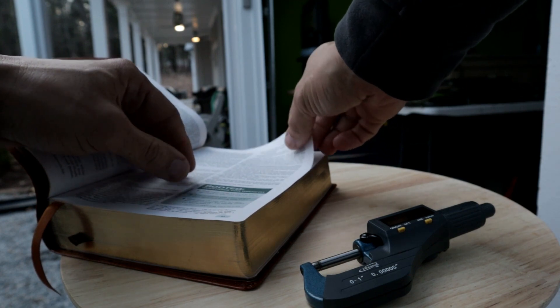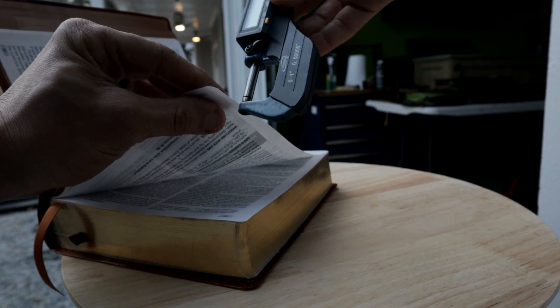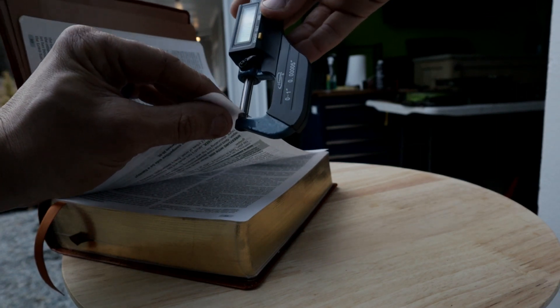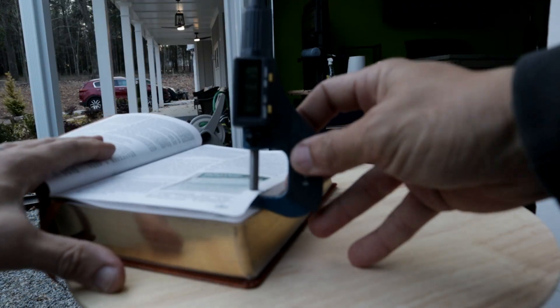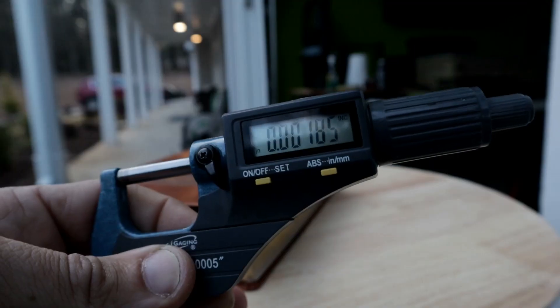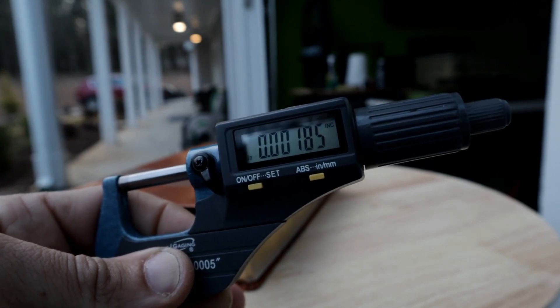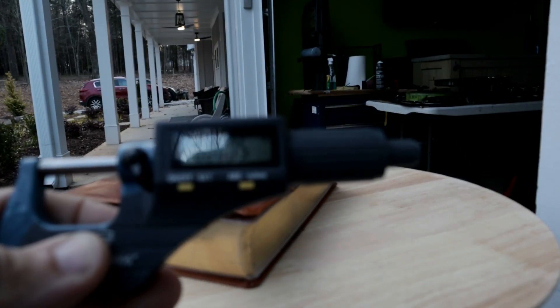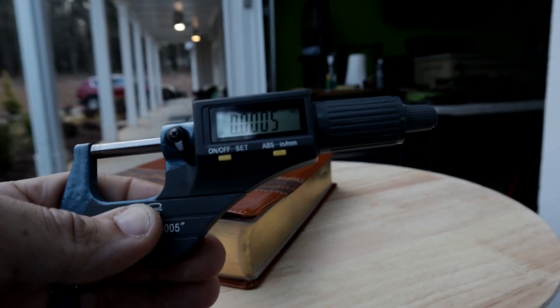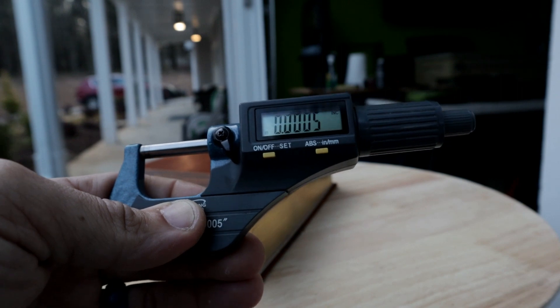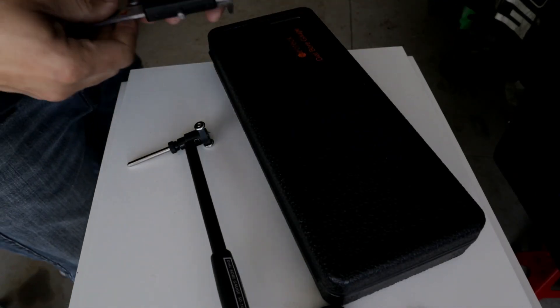To give you an example, here is one of the finest pages, this is a Bible, and we're going to take a measurement. Now as you can see, it doesn't even measure two thousandths of an inch. The accuracy of these things is supposed to be five tenths of a thousandth of an inch, just to give you an idea.